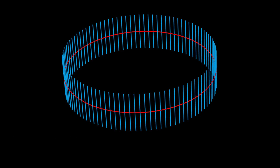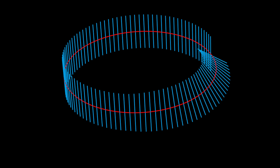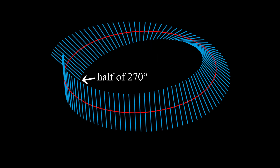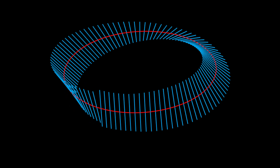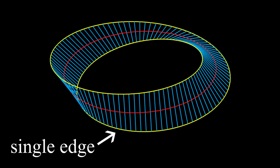To turn the cylinder into a Mobius strip, turn each toothpick toward the center by an increasing amount until the last toothpick is turned 180 degrees. The angle of rotation of each toothpick is always half of the angle of its location around the red circle. The Mobius strip has a single edge because by turning the last toothpick 180 degrees we join the two edges of the cylinder to make one edge. The upper edge became the lower edge and vice versa.